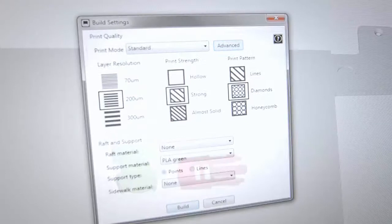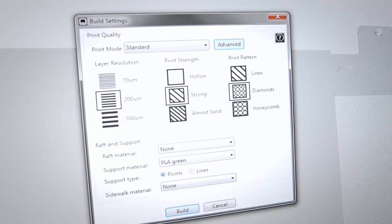When you select build, it goes to a far richer range of settings than is available on the Uprint SE. Looking at the layer resolution, we see from the thinnest setting of 70 microns versus on the SE, 254 microns. The default setting is 200 microns. In addition, there is a wide range of print strength and pattern settings for the model construction.